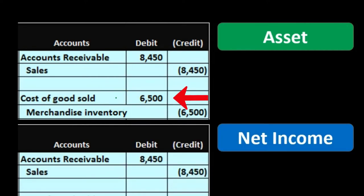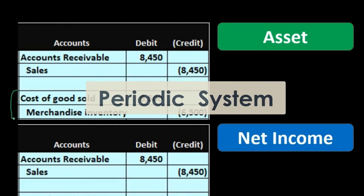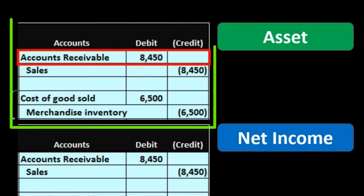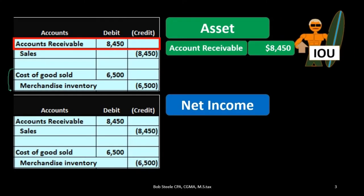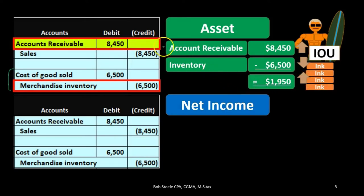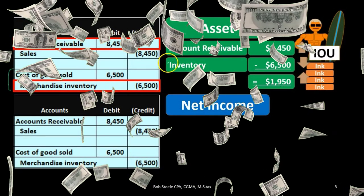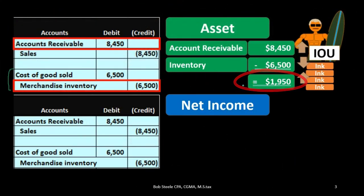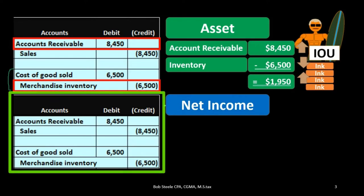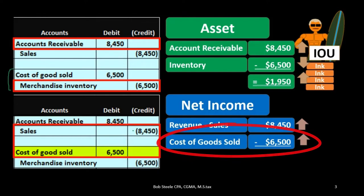If we analyze these two journal entries, we can ask: what's happening to assets? Remember this second journal entry is the one that differs between the perpetual and periodic systems. Assets are going up by accounts receivable and going down by merchandise inventory, so the net effect on total assets is the difference of $1,950. We got an IOU and the inventory went down, but we're going to receive more money than the cost of the inventory we gave up.